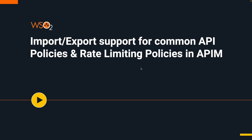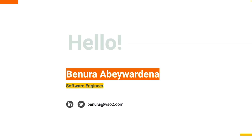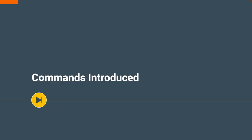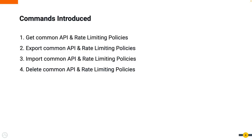The key idea behind this feature is to export a policy available in one environment and import it to a different environment. To get started, there are four main commands introduced in API CTL to perform get, export, import, and delete operations on both common API policies and rate limiting policies.